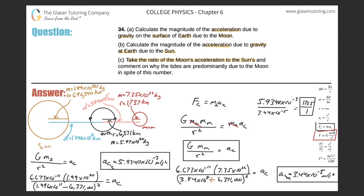So now we get: 6.673 times 10 to the negative 11, times 7.35 times 10 to the 22nd, divided by the quantity 3.84 times 10 to the 8th plus 6,371,000, close parenthesis, squared. Now we get a value of centripetal acceleration for the Moon on the other side of the Earth: 3.22 times 10 to the minus 5 meters per second squared.